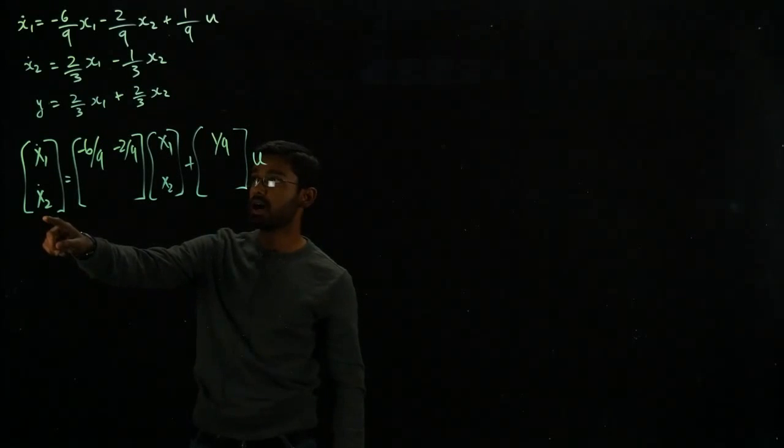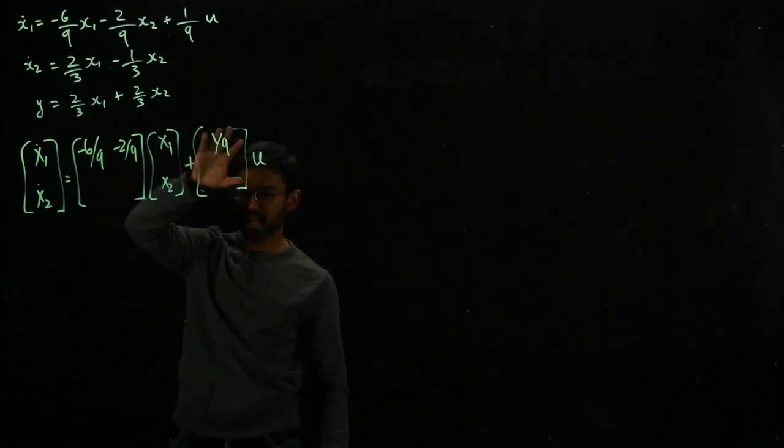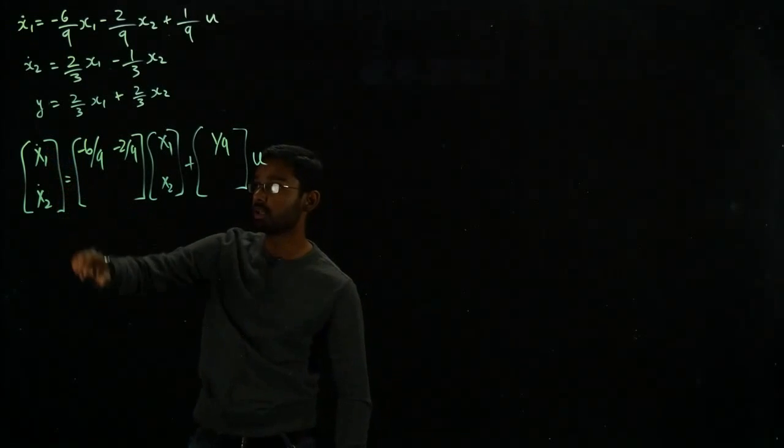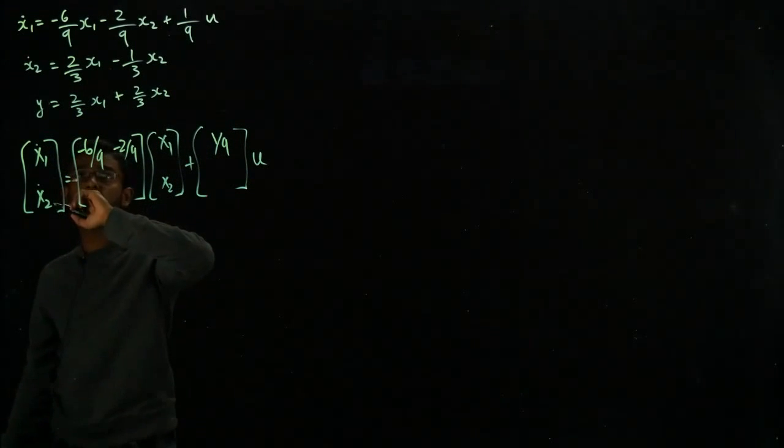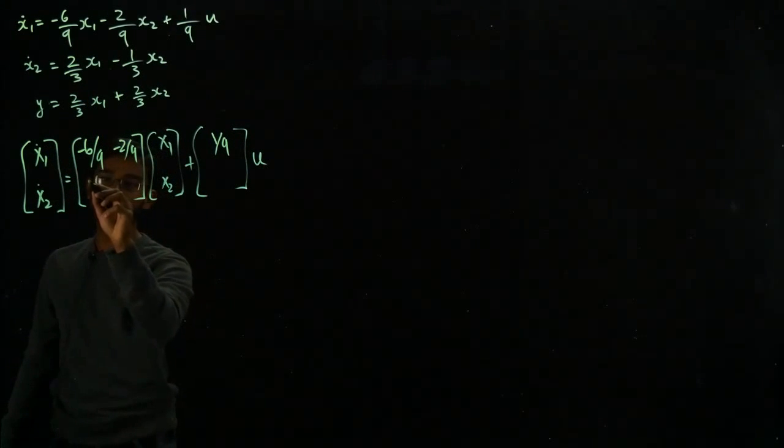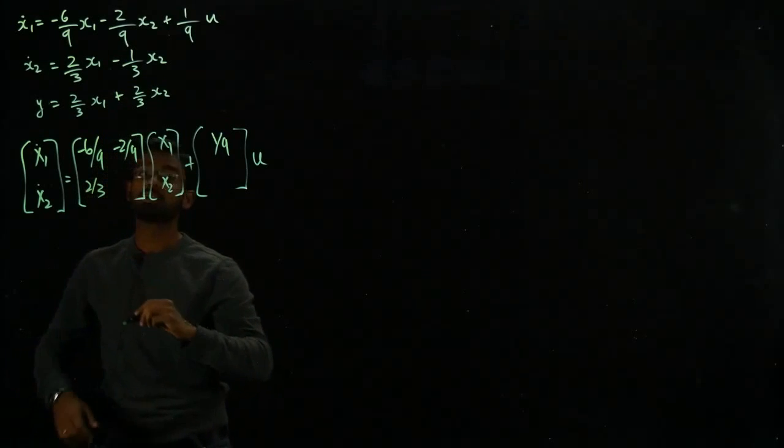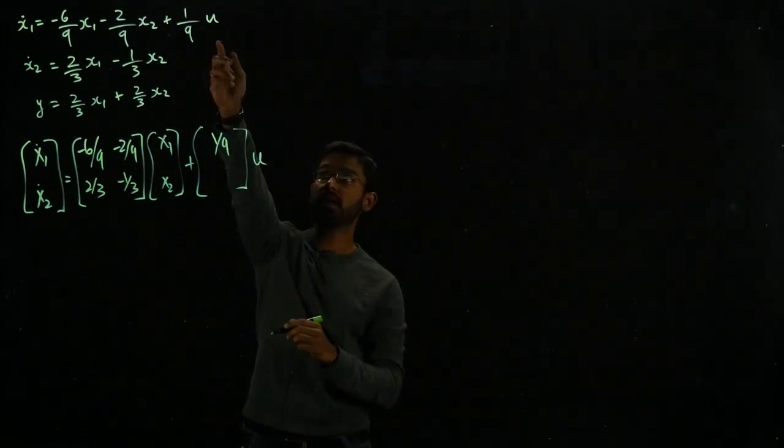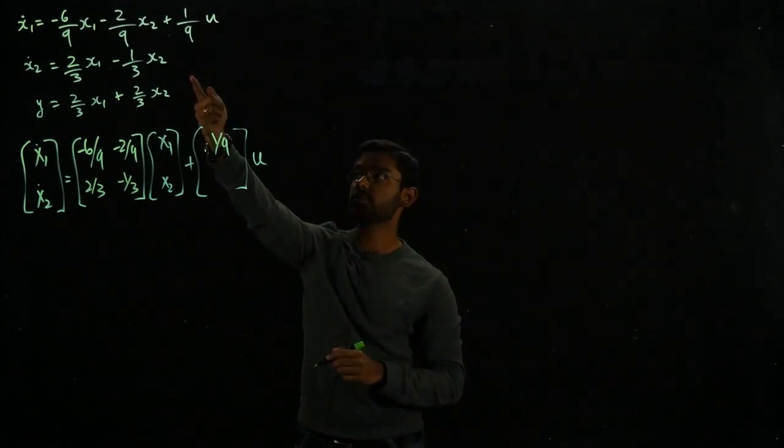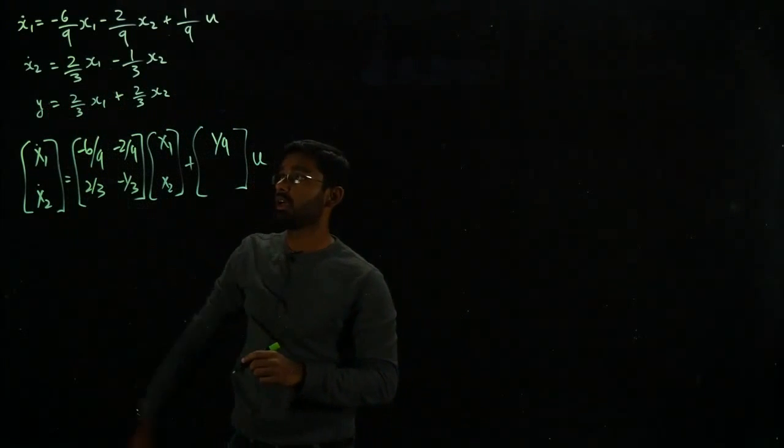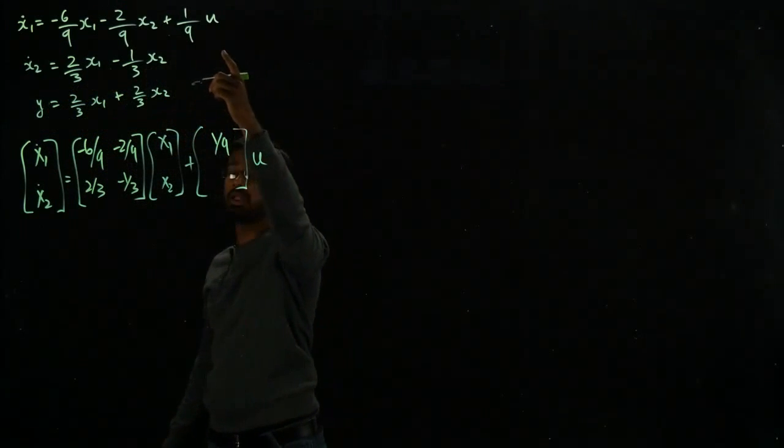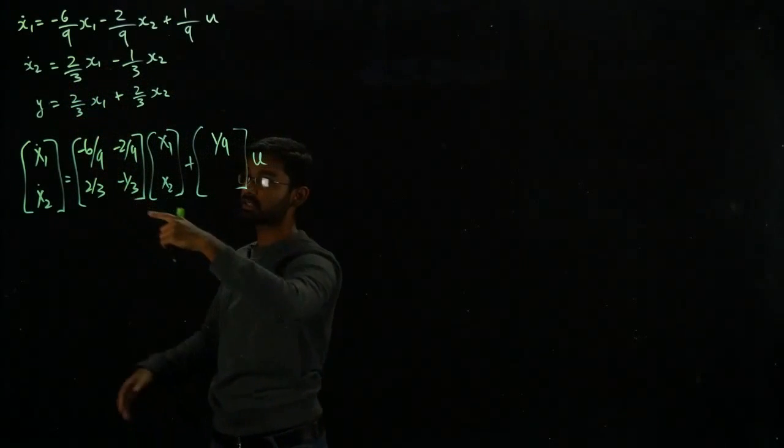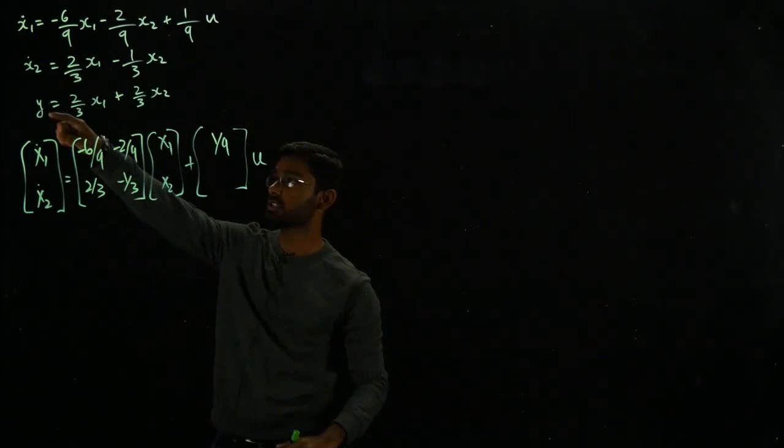Let's look at x₂ dot. I'm simply just stacking equations one on top of the other and that's just the matrix representation. For x₂ dot in terms of x₁ I have 2 over 3. In terms of x₂ I have minus 1 over 3. I don't have any input as you can see, which means x₂ dot is not going to depend on the input directly.